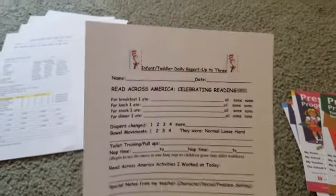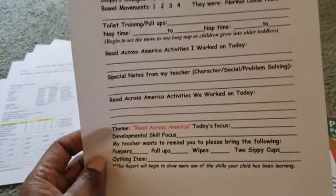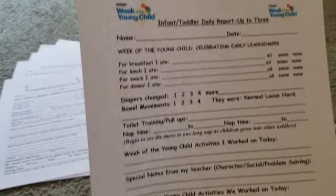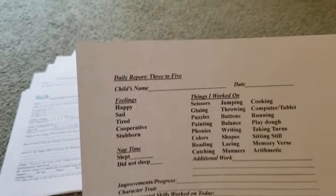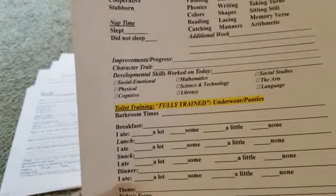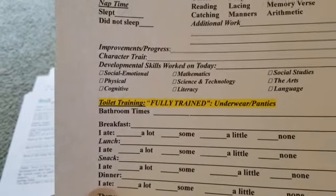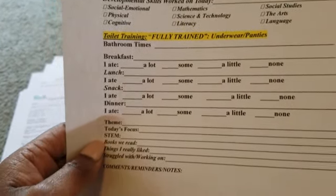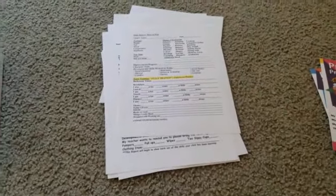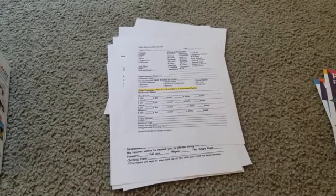I also have special reports where we discuss activities like Read Across America and the Week of the Young Child, where we do all types of different activities. My last report also covers feelings and nap time, but now we're getting into toilet training — fully trained. So the child I'm caring for is in underwear or panties. That gets given each day to parents to let them know what they're doing, how they're doing, and the developmental milestone we worked on.